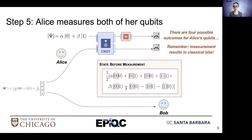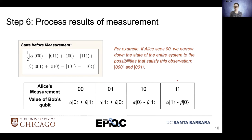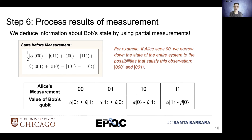Highlighted here are the states that she could possibly observe. We can come to conclusions about Bob's state by using those measurements. If Alice sees zero zero, we narrow down the state of the entire system to include only those that include the zero zero state for the first two qubits.